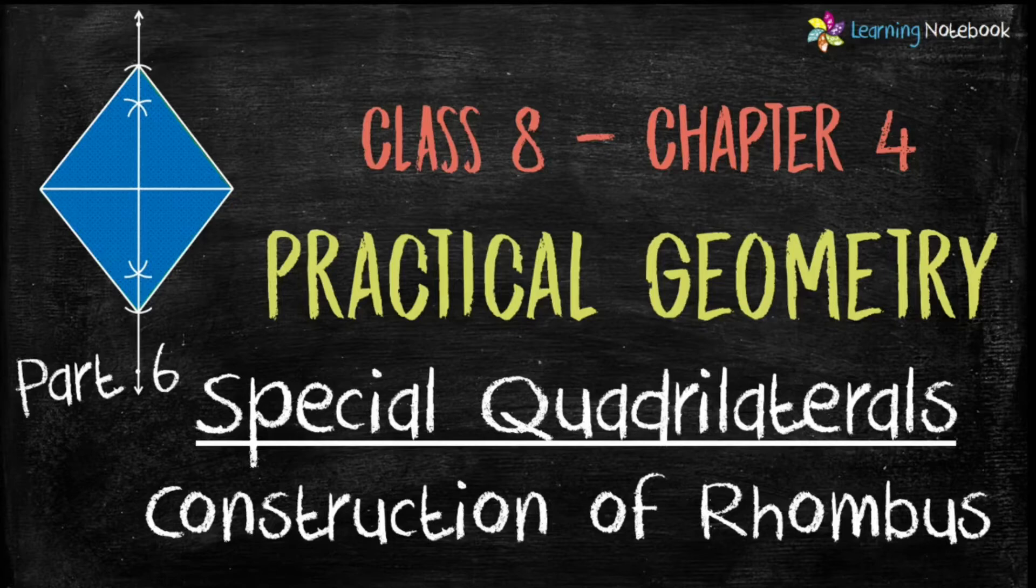In previous part, we learnt the construction of one of the special quadrilaterals, square. In today's part, let's learn the construction of another special quadrilateral, rhombus.